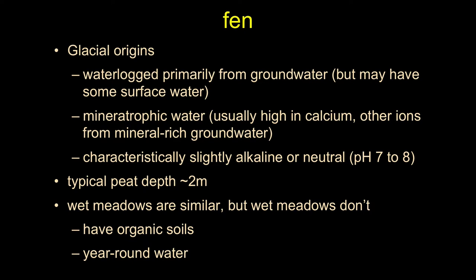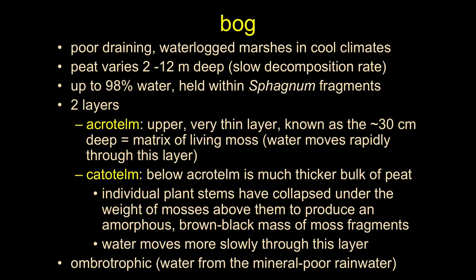A few examples of wetland types: fens are generally glacial in origin, fed primarily by subsurface glacial melt flow rather than rivers. They have mineral-trophic waters — usually high in calcium and other ions — and tend to be slightly alkaline. Peat in fens is typically on the order of a couple meters deep, similar to some wet meadows.